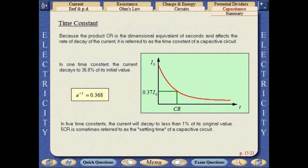In five time constants, the current will decay to less than 1% of its original value. 5CR is sometimes referred to as the settling time of a capacitative circuit.